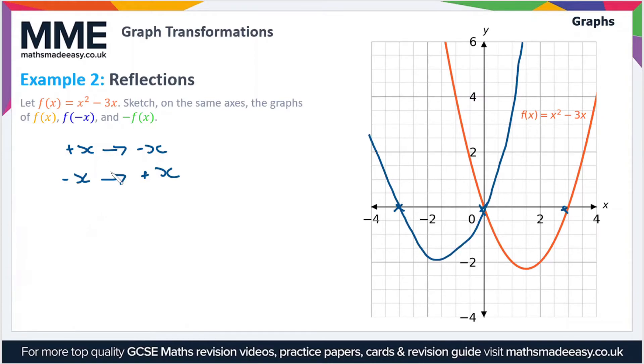Now we can move on to -f(x). For -f(x), this essentially takes all the positive y values, turns them negative, and takes all the negative y values and turns them positive. So this is a reflection in the x-axis.